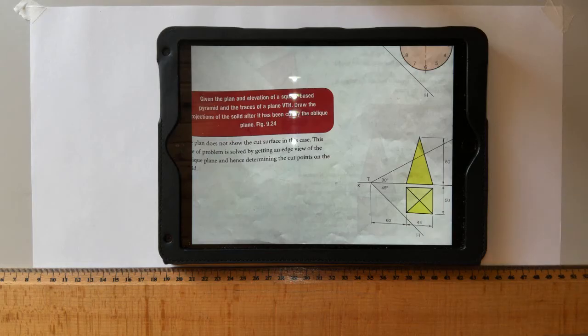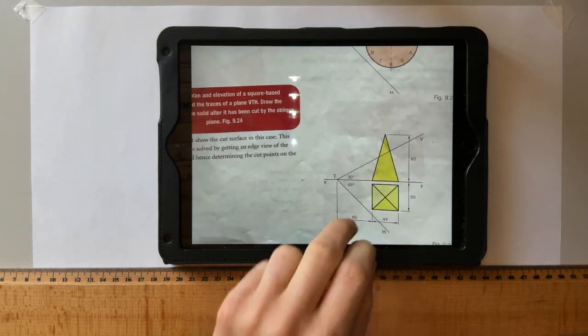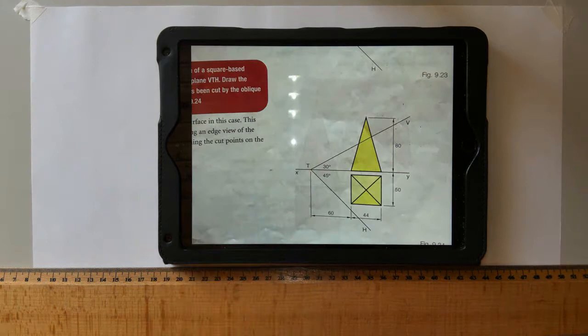So for the last one it tells us, given the plan and elevation of a square base pyramid and the trace of the plane VTH, draw the projection of the solid after it has been cut by the oblique plane. So with this one it's slightly different. We can't actually see the full cut surface in plan as it's not fully cut. So what we need to do is we need to create an edge view of an auxiliary to see where all the points are cut.